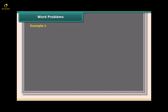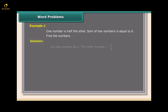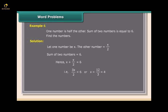Word problem example 1: One number is half the other. The sum of two numbers equals 6. Find the numbers. Solution: Let one number be X. The other number is X/2. So X + X/2 = 6, giving 3X/2 = 6, therefore X = 4. The numbers are 4 and 2. Check: 4 + 2 = 6. Answer is correct.